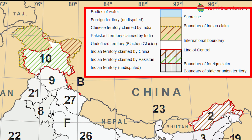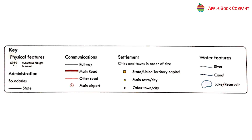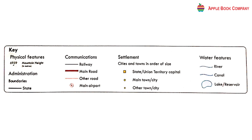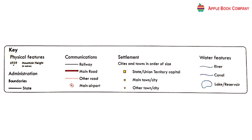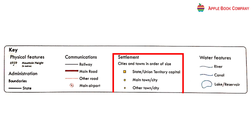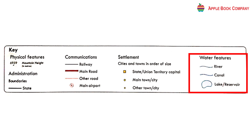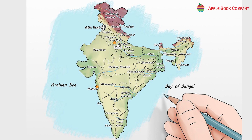The key tells us what each symbol stands for. Physical features include mountain height. State and administration boundaries are shown as a bold black line. For communications: a railway uses a single line, a main road uses a dark maroon line, and other roads use a red line. A main airport has its own symbol. States and union territories are shown as a square in yellow, main towns and cities in yellow, and other towns in smaller yellow. Water features: rivers are shown as a single line, canals as hash lines, and lakes and reservoirs as a small bean-shaped symbol.